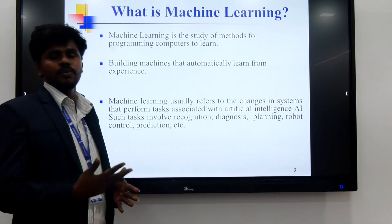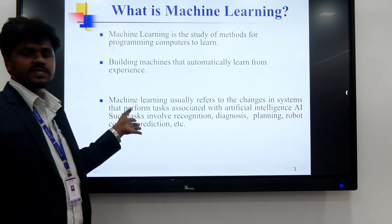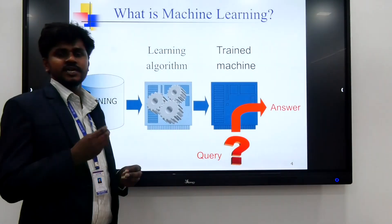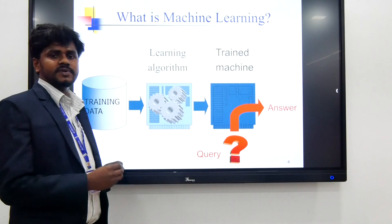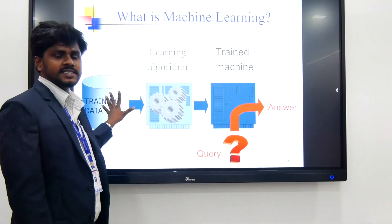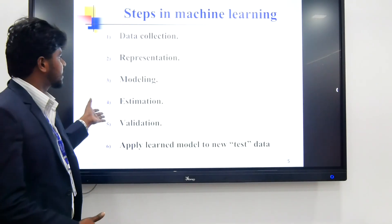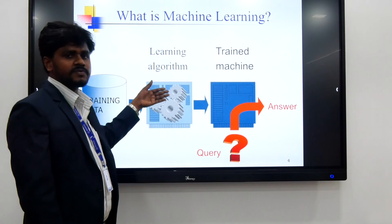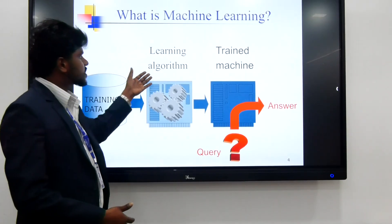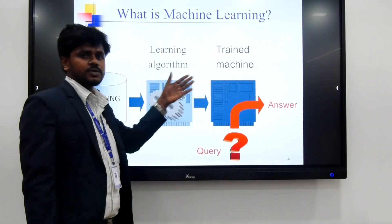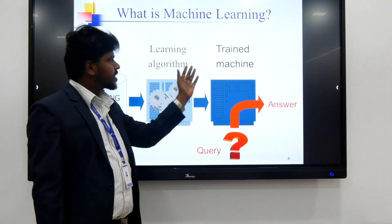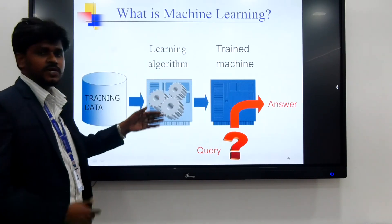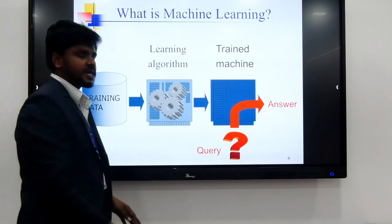Nowadays the machine learning process is widely used. Most of these use AI and drones. Data is called as information — data is a particular set of information. Pre-processed data is called training data. Data is considered for the learning process, producing learning algorithms for the machine learning process. Training data is controlled by the algorithms to train the machines, and then the machine produces answers based on our queries through the algorithm.